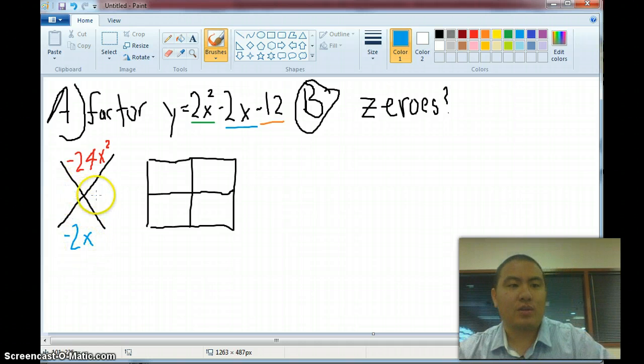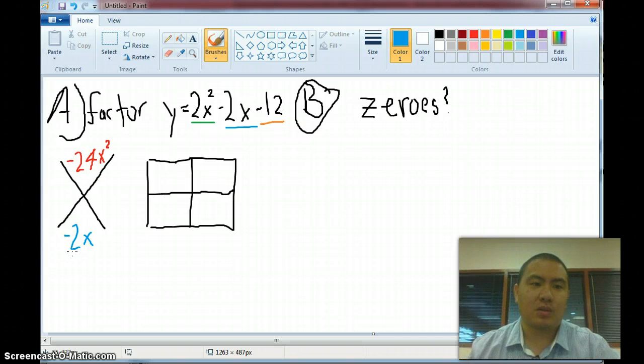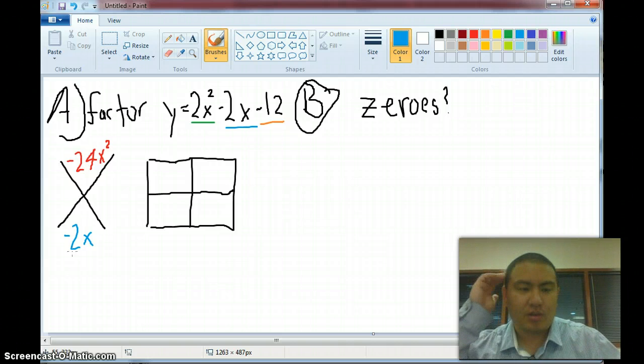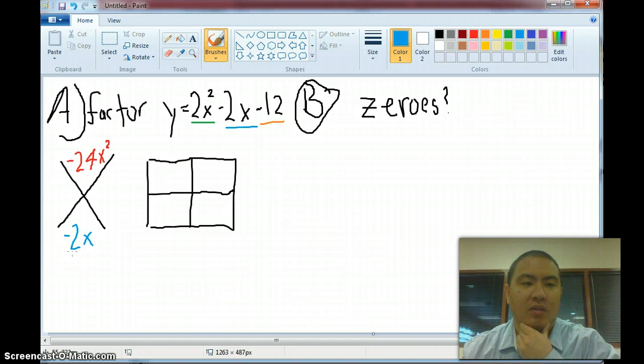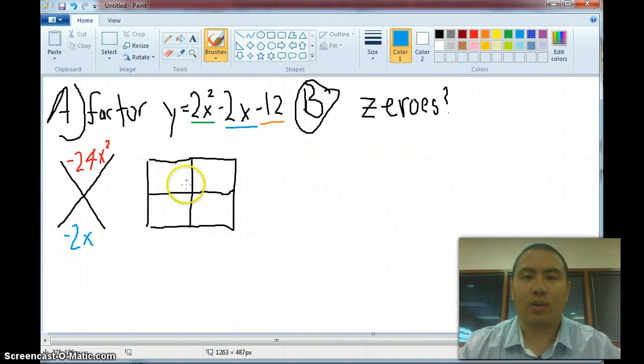So you're looking for two numbers here that will multiply and give you negative 24 and will add up and give you negative 2. So let's think about a couple different ones. We could use 2 and 12, but if we added those together, I don't think it would be anywhere close to negative 2. 3 and 8, well, they can multiply and give me negative 24, but those things are a little too far apart. How about 6 and 4? Oh, 6 and 4, there's a distance of 2 in between those, so that looks really good. They do multiply and give me negative 24, so let's go ahead and try that.